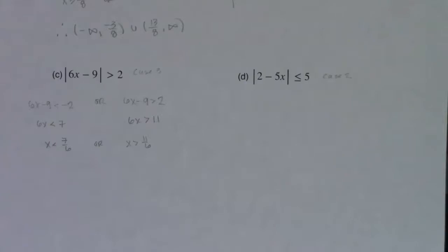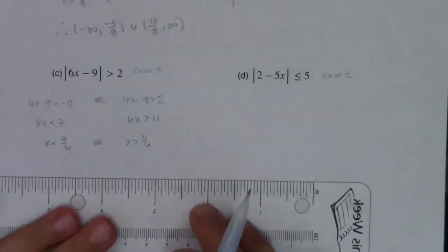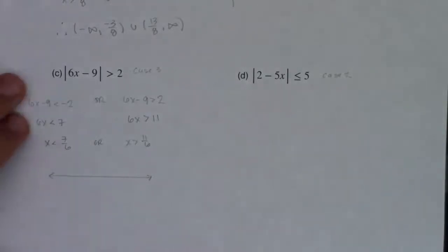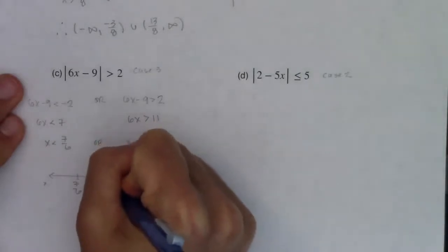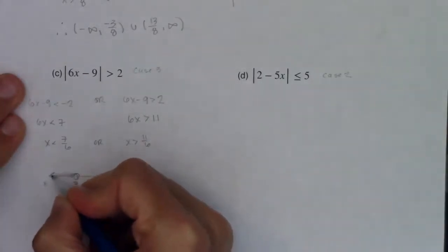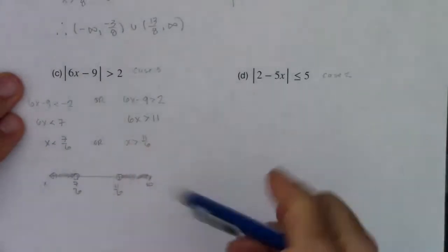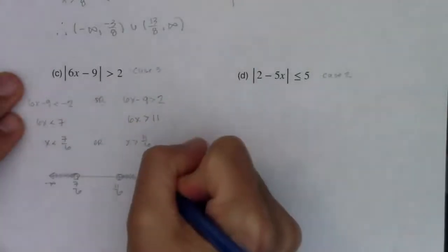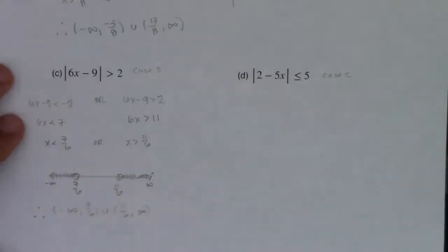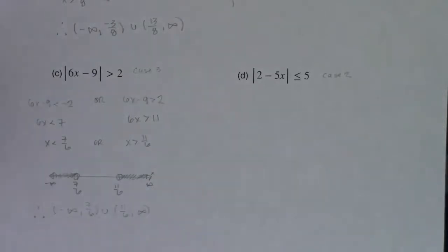It's your call whether to go straight to interval notation or use a graph — both are totally acceptable. If a number line helps, use it, no shame in that. On the graph: open dot at 7/6 shading left, open dot at 11/6 shading right. In interval notation: negative infinity to 7/6, union 11/6 to positive infinity.